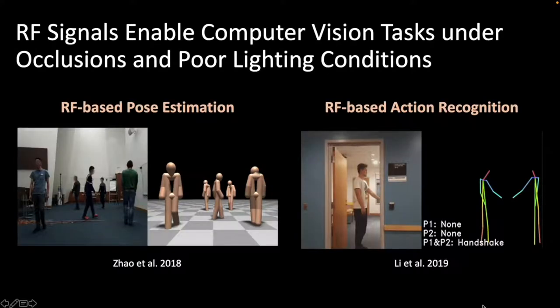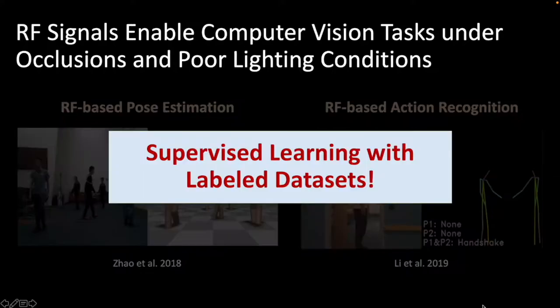Previous works have leveraged those properties to detect people and perform various computer vision tasks like pose estimation and action recognition. Such RF-based tasks have typically used supervised learning with labeled datasets.